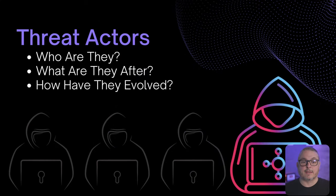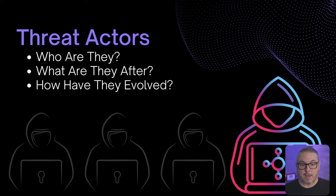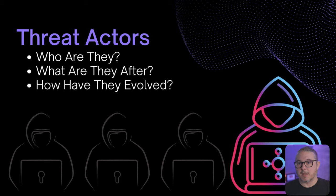Let's start with who we're defending against — threat actors. Who are they? What are they after? How have they evolved? Broadly, it's anyone who wants your information. There are two primary types: nation state actors, embedded deep into systems looking more for espionage, and the common ones seen more frequently — those after monetary gain, which is mostly what we see in news around ransomware.